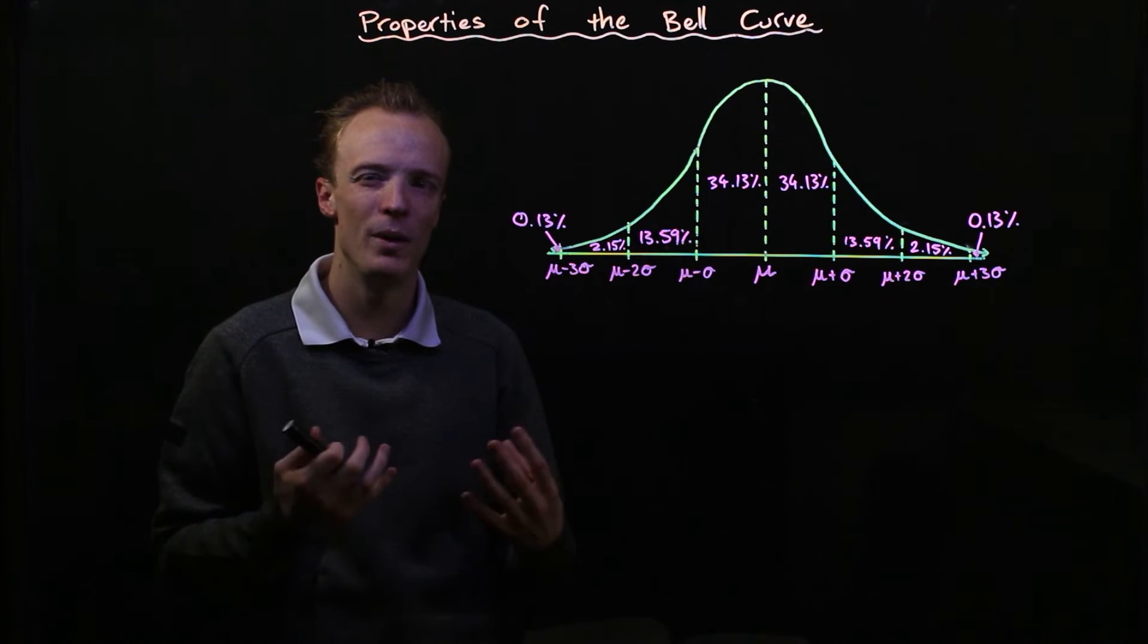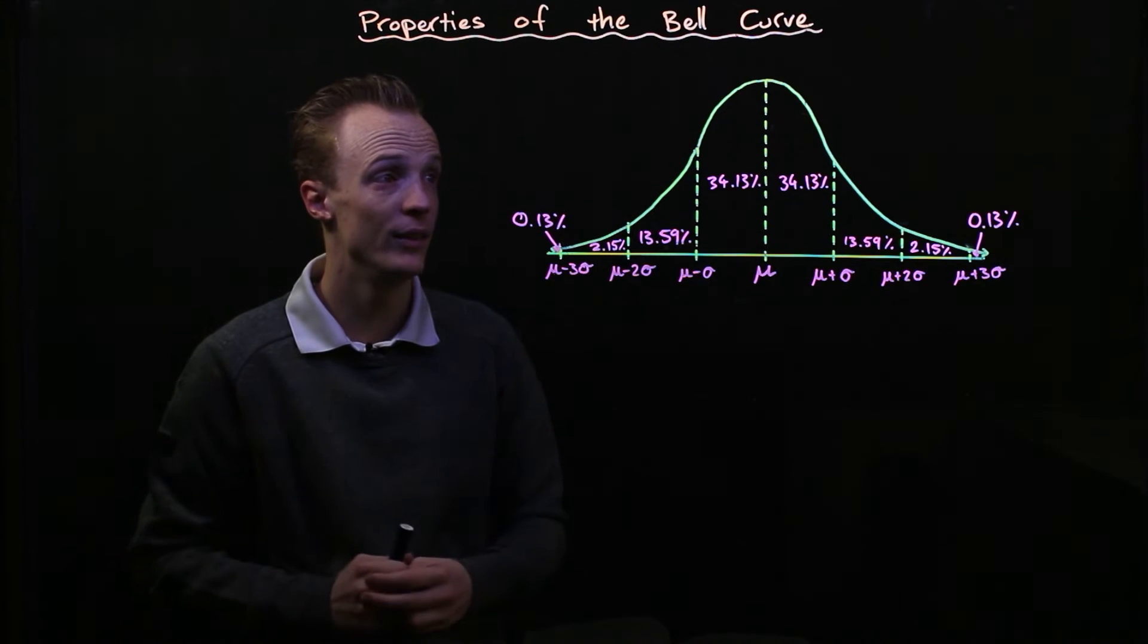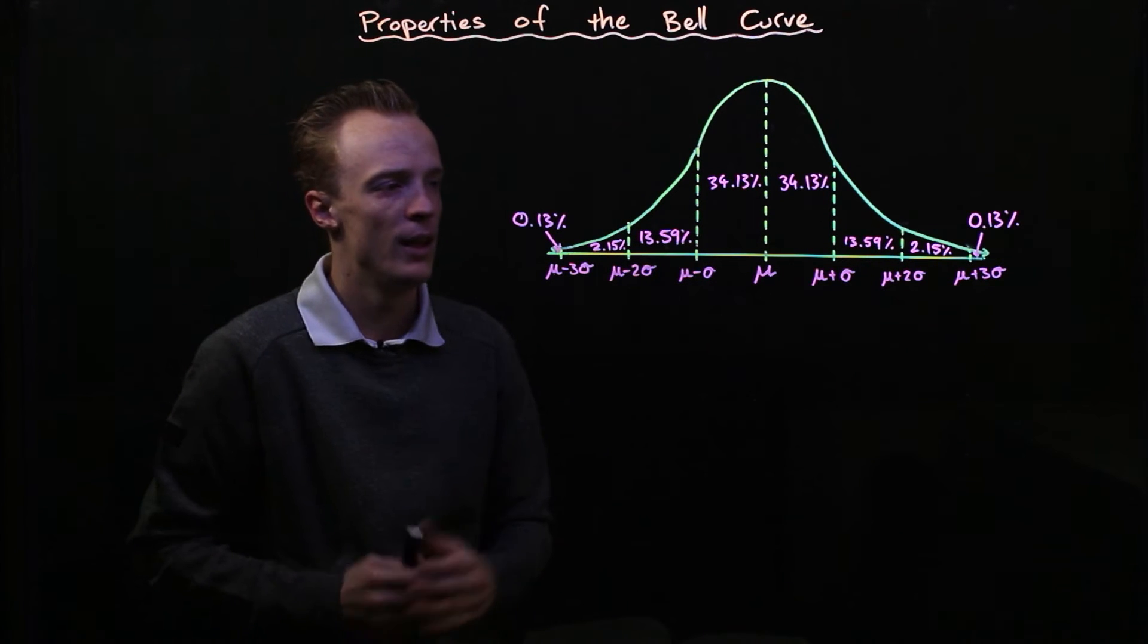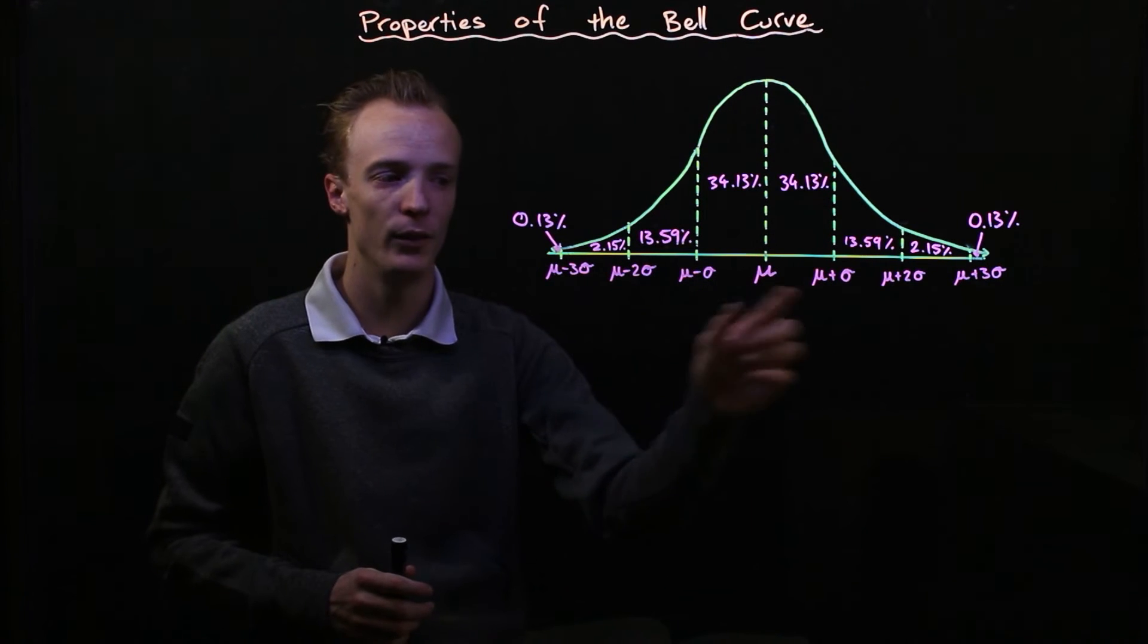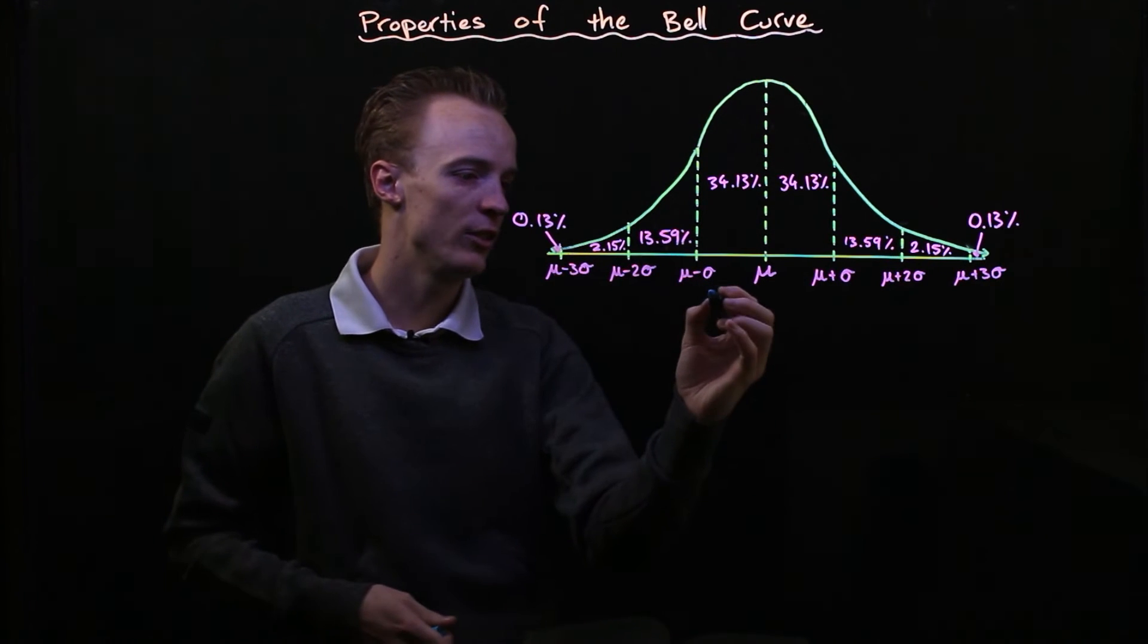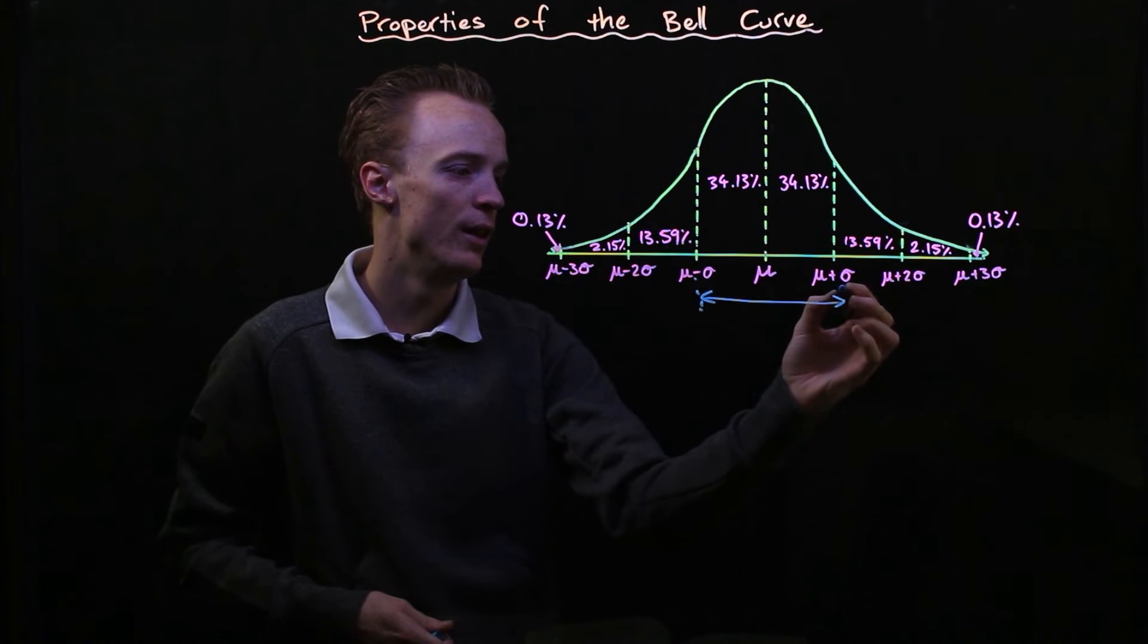That brings us to what we call the 68-95-99.7 properties of a bell curve. That's to say if we go one standard deviation away from the mean, plus or minus, we'll actually capture 68 percent of the data.